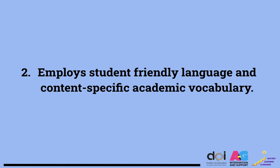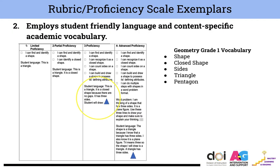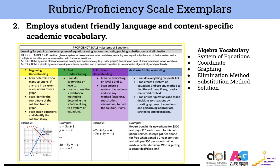Employ student-friendly language and content-specific academic vocabulary — let's take a look at some samples. In this example, a first grade teacher has created a rubric for geometry, employing language that is grade-level appropriate as well as content specific. They even included student language they might look for when determining what proficiency level the student is at. In the next example, a secondary math teacher has created a rubric for their algebra class and has also employed appropriate academic language that is content specific.